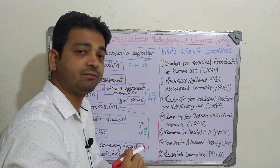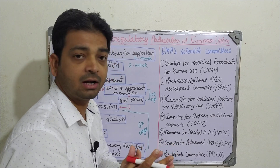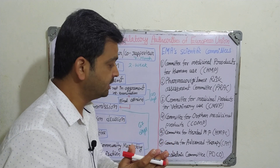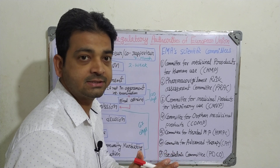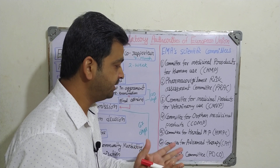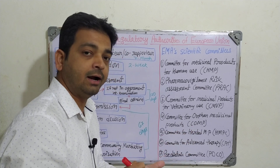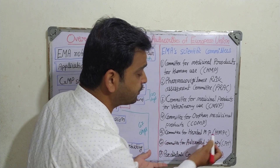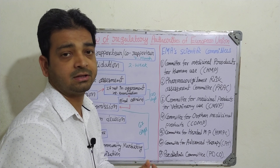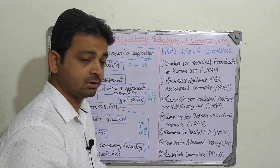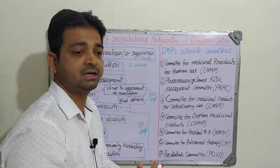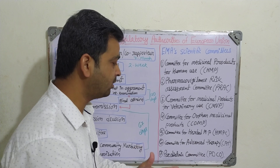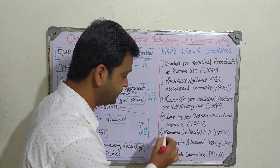Orphan medicinal products are medicines that lack proper background scientific evidence, and the COMP reviews submitted evidence and gives decisions for these. The fifth committee is for Herbal Medicinal Products — covering drugs derived from traditional plants and herbs. This committee reviews safety, efficacy, and toxicity profiles of herbal products and gives decisions on their approval and use.